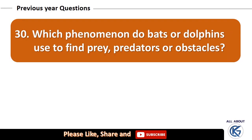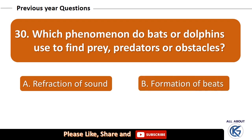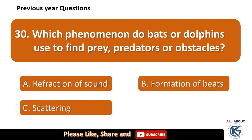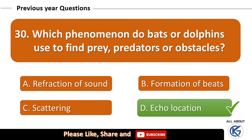Which phenomenon do bats or dolphins use to find prey, predators, or obstacles? Refraction of sound, formation of beats, scattering, or echolocation? The right answer is echolocation.